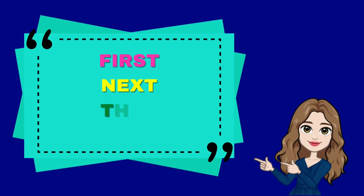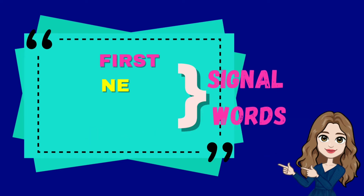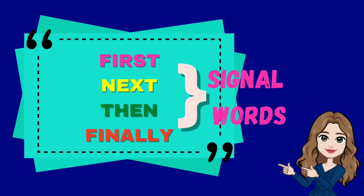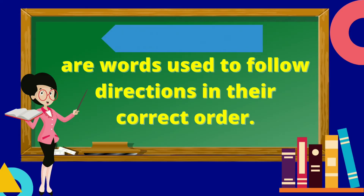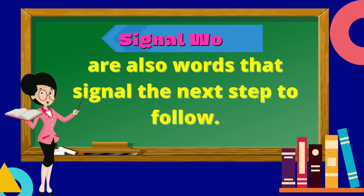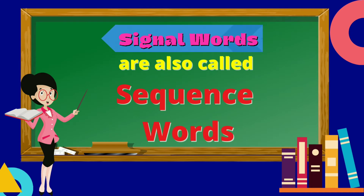The highlighted words from the paragraph we have read are first, next, then, and finally. First, next, then, and finally are called signal words. Signal words are words used to follow directions in their correct order. They are also words that signal the next step to follow. Signal words are also called sequence words.